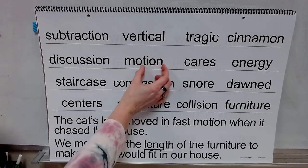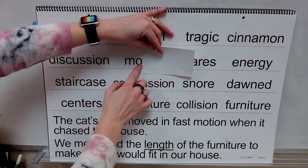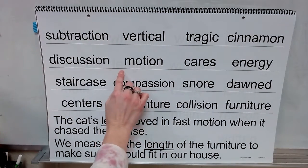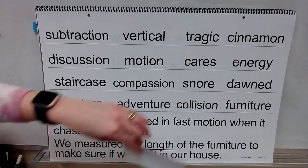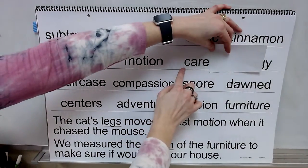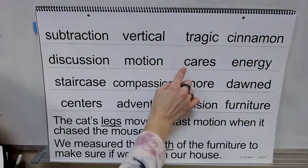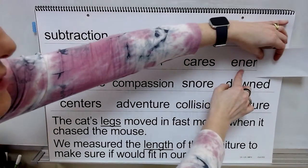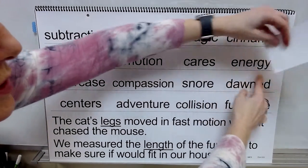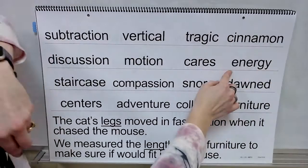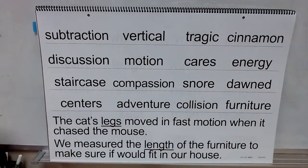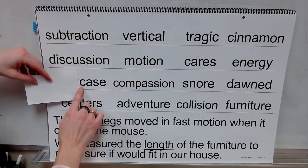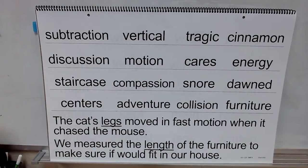Here's our final syllable — open syllable 'mo'. Syllable: 'shun'. Word: motion. Base word: care. Add your ending. What word? Cares. Syllable by syllable — word: energy. Syllable: 'stable'. Syllable: 'stare'. Syllable: 'case'. Word: staircase.